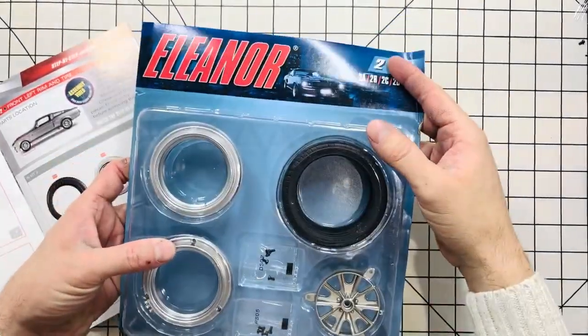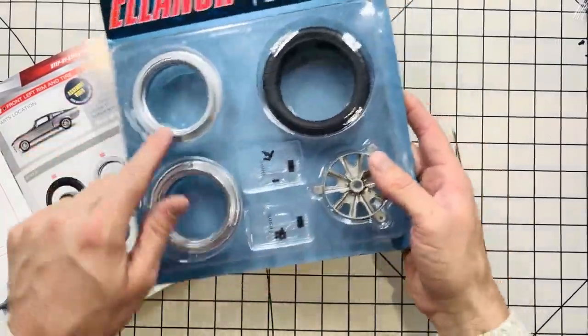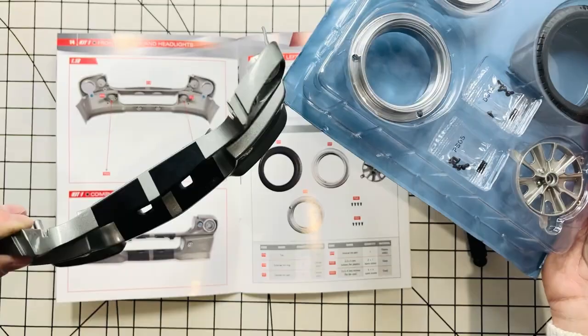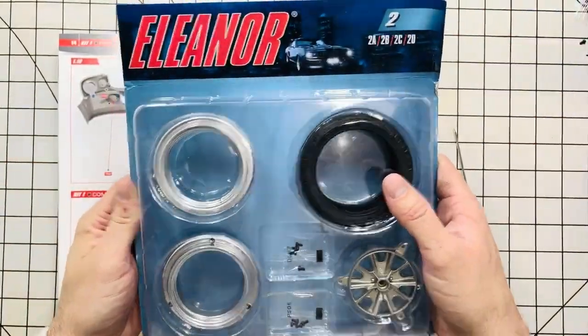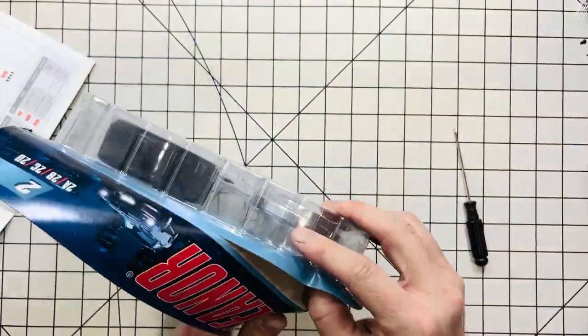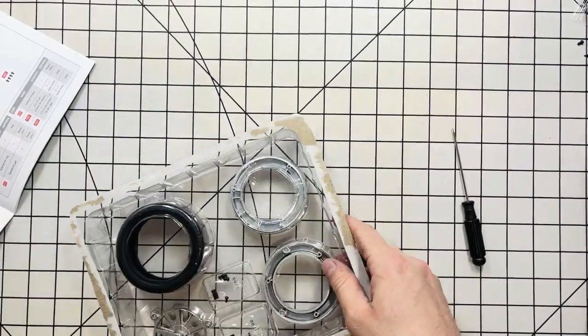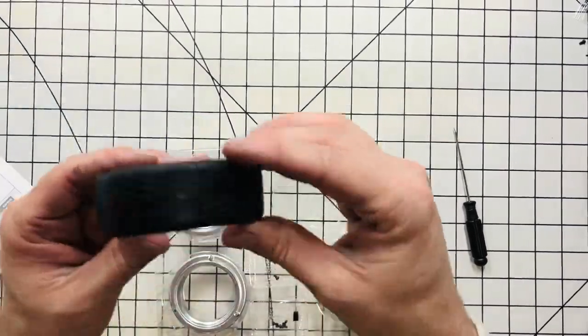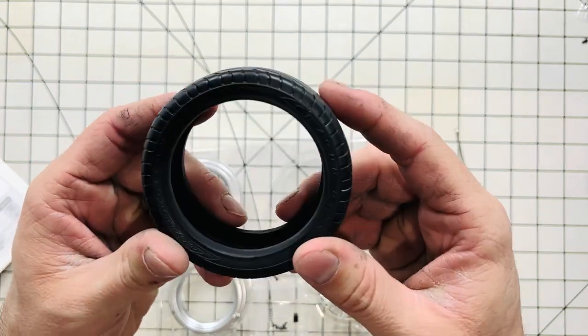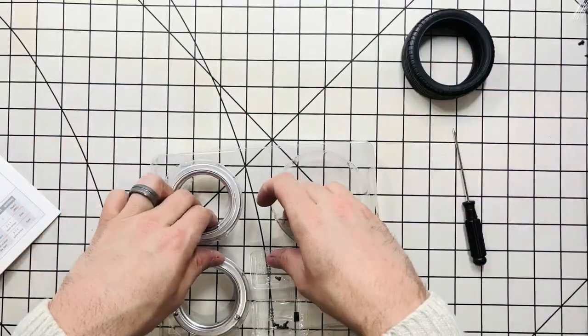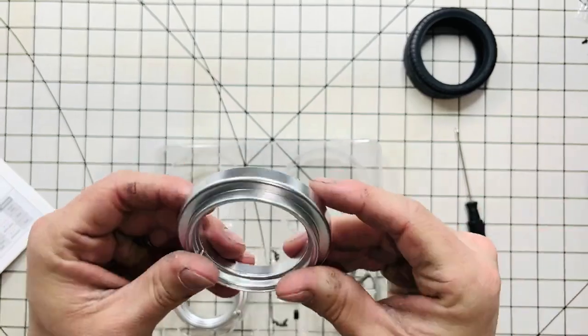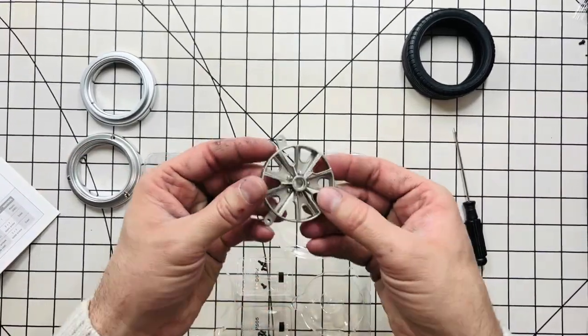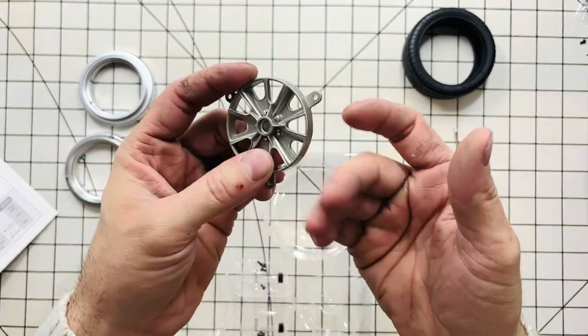Now we're moving right along to kit number two, which is the rim, three-piece and tire. We've already completed step number one, which was the front nose. Now let's start with step number two. A real nice Goodyear Eagle F1 tire, a real nice rim piece, there's the other piece, of course the aluminum or cast rim.